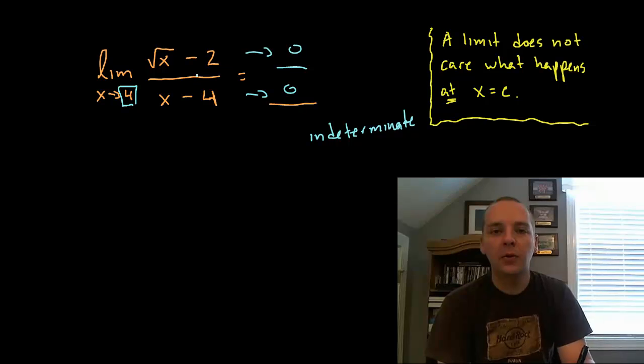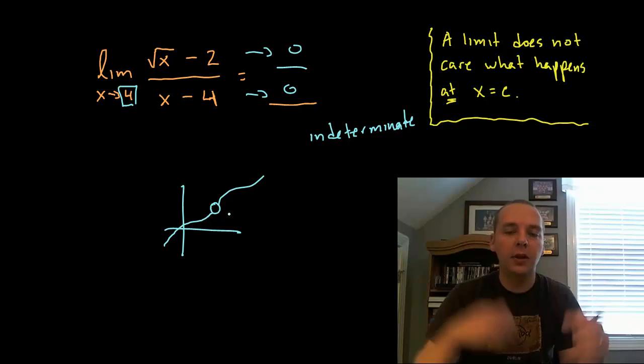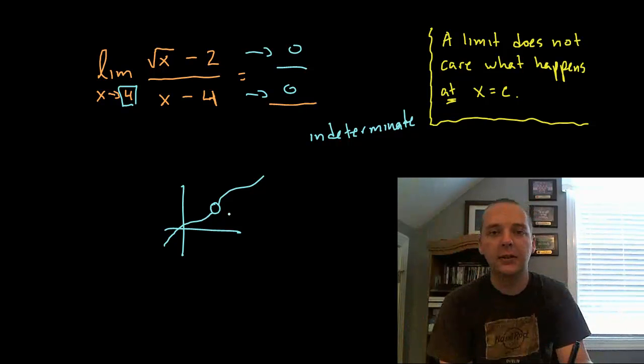What do we do in this type of situation? Well, the one thing that needs to be stressed about limits is technically a limit does not care what happens at x equals c. So even though it's undefined or indeterminate at x equals 4, the limit could very well still exist. There's plenty of cases where the function value is not defined at a point but the limit would still exist there.